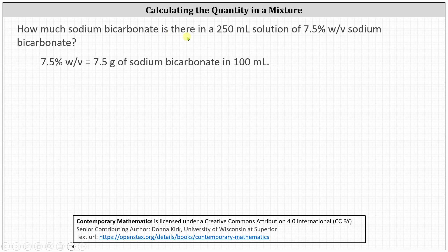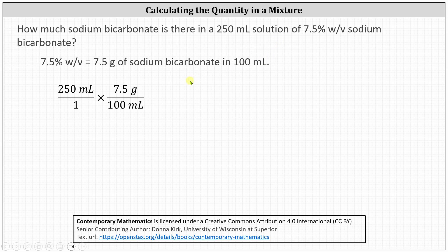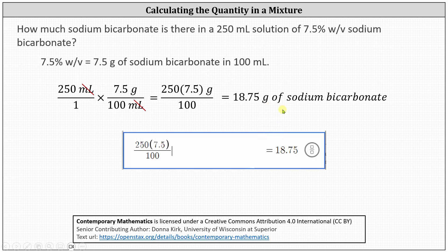As an example: how much sodium bicarbonate is there in a 250 milliliter solution of 7.5% weight by volume sodium bicarbonate? The 7.5 W/V indicates there are 7.5 grams of sodium bicarbonate in each 100 milliliters of the solution. Therefore, to determine how much sodium bicarbonate is in 250 milliliters, we begin with 250 milliliters and multiply by the rate of 7.5 grams per 100 milliliters. Notice milliliters simplify out — we have 250 times 7.5 divided by 100 grams, which equals 18.75 grams of sodium bicarbonate in the 250 milliliter solution.